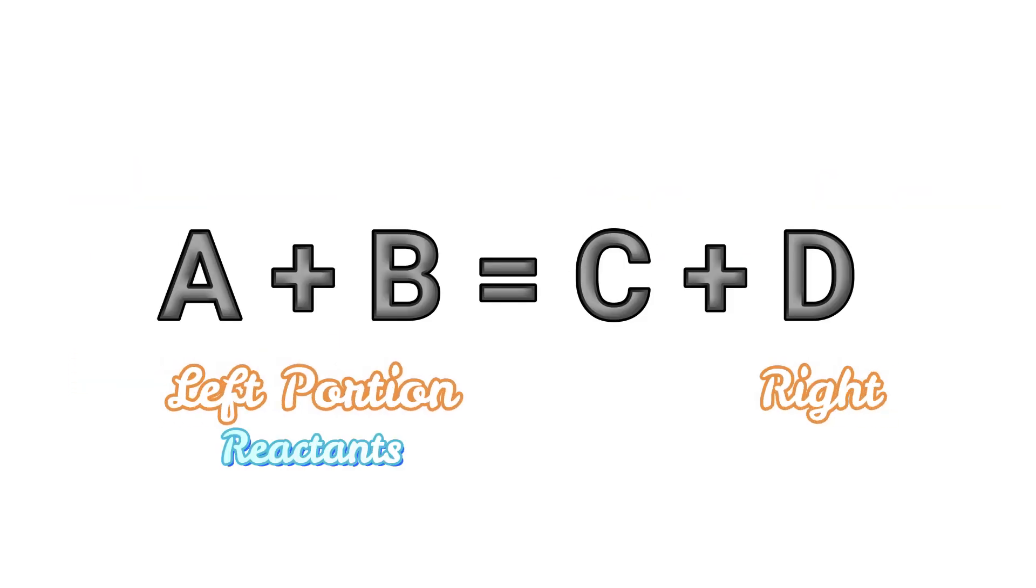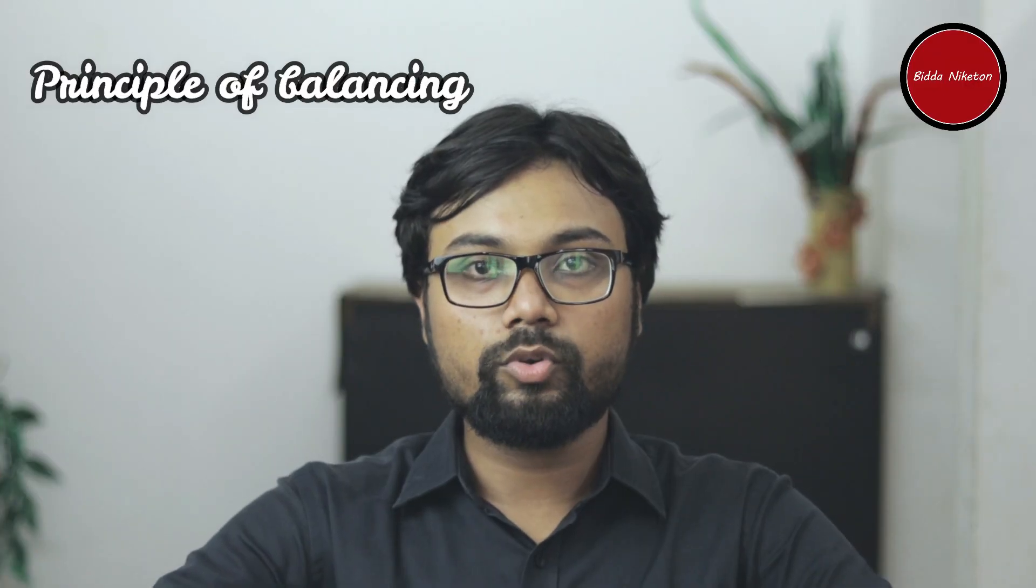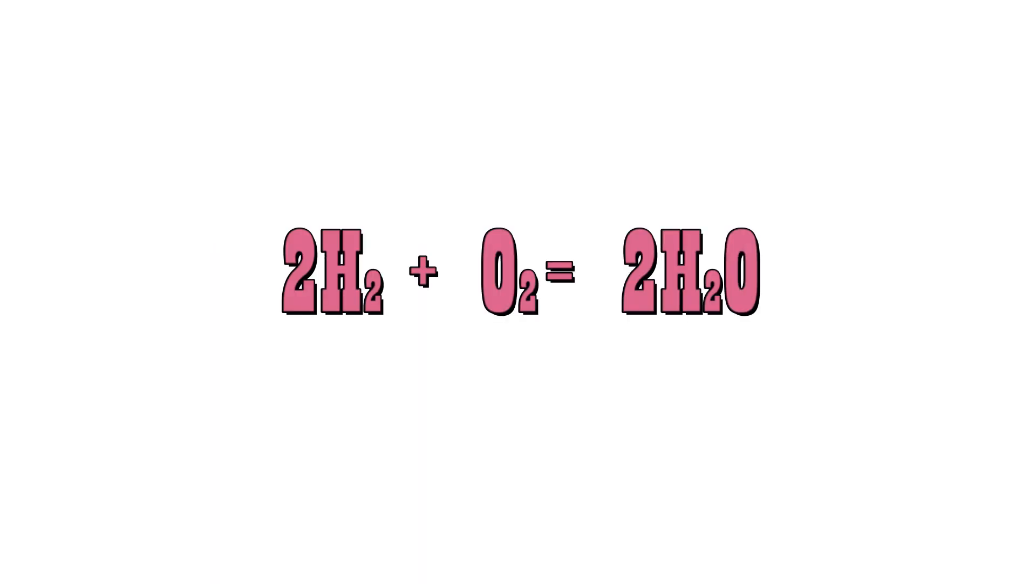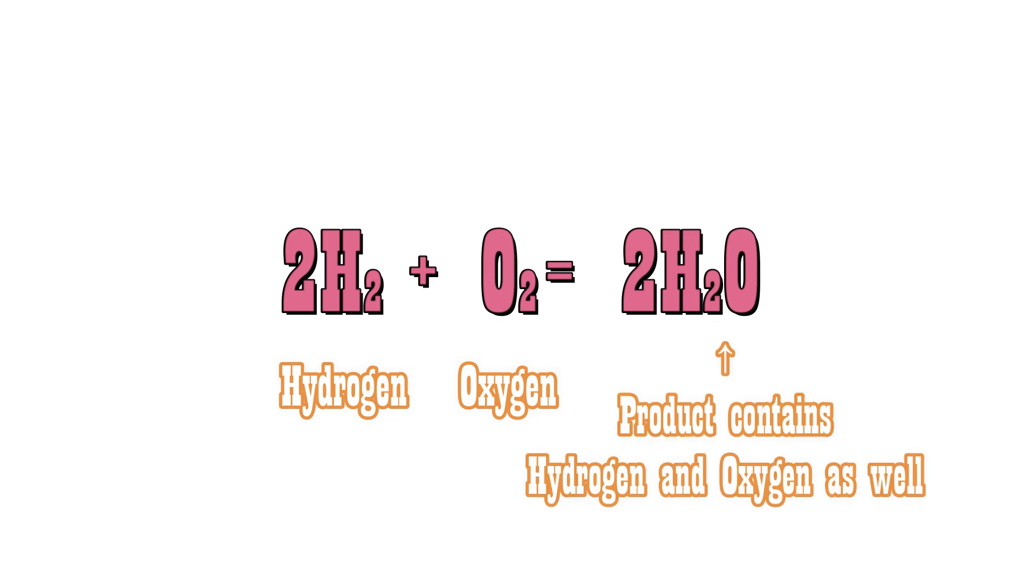The principle of chemical equation balancing says that products and reactants will contain similar types of atoms and the same number of each type of atom. Now let's take this example. Firstly, the reactants have hydrogen and oxygen atoms, hence the products must have hydrogen and oxygen atoms. Here we see that products and reactants both have similar types of atoms.